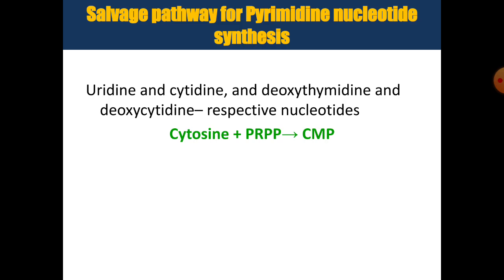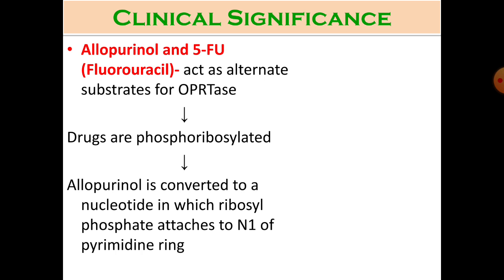Similar to purine nucleotides, pyrimidine nucleotide synthesis also has a salvage pathway. Uridine, cytidine, deoxythymidine, and deoxycytidine are salvaged from metabolic pathways to produce their respective nucleotides. For example, cytosine from nucleotides can yield CMP with the help of PRPP.